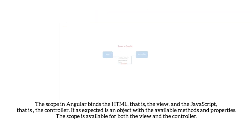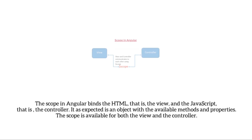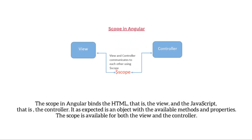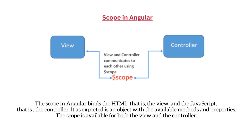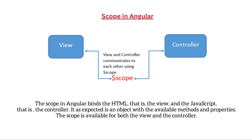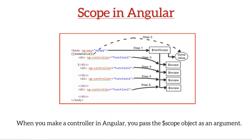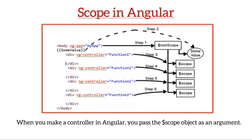The scope in Angular binds the HTML (the view) and the JavaScript (the controller). It is an object with available methods and properties, accessible by both the view and the controller. When you make a controller in Angular, you pass the $scope object as an argument.